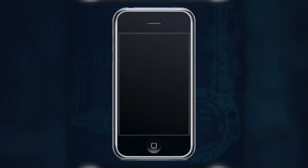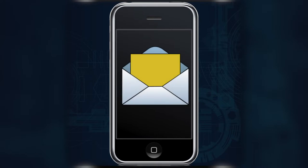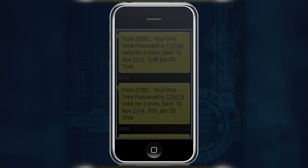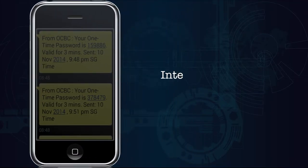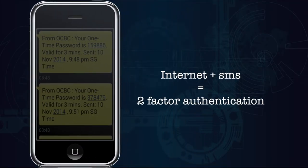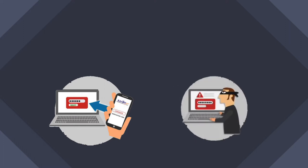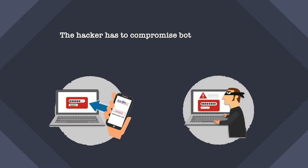Have you ever received an OTP for a transaction — maybe for an e-commerce transaction, online banking transfer, or social media login? When it sends you an OTP through SMS, the internet becomes one medium and the SMS is the second medium through which the second factor of verification comes to you. To hack you, the hacker has to compromise both mediums of the verification mechanism.